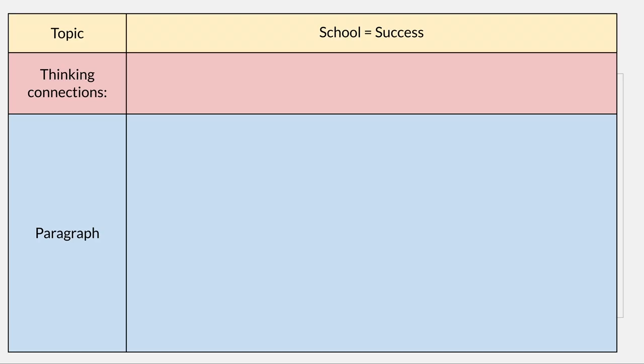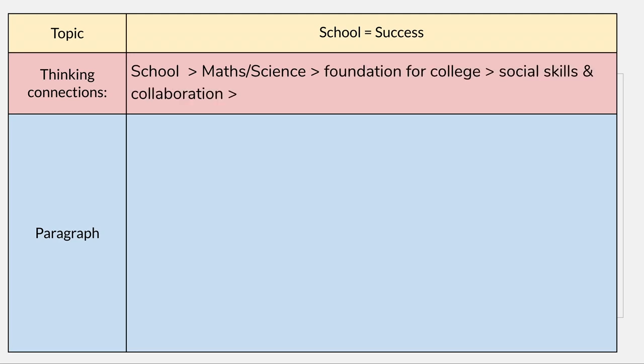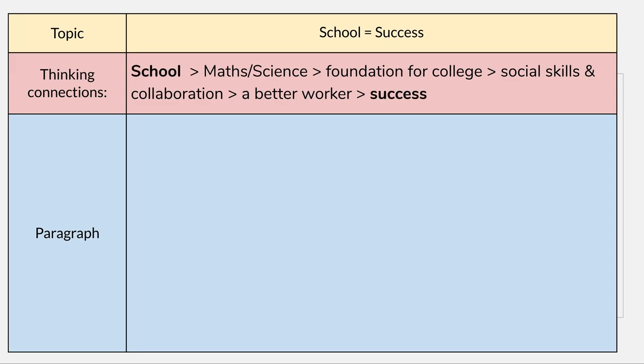Let's look at another way to develop good explanations. I'm going to give you a topic and an end point, and we're going to think about all the steps needed between those two points. If we look at school equals success — does going to school equal success in the future? Well, not necessarily. Starting from school, we learn things about subjects like math and science, which become our foundations for college. In college, we learn social skills and collaboration, and combining knowledge with collaboration skills makes us better workers. Being a better worker is what helps us become a success. We've made a direct line connecting how school makes us successful.